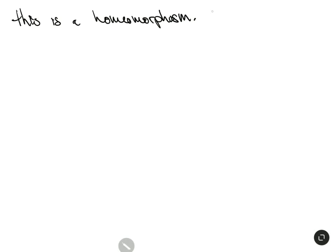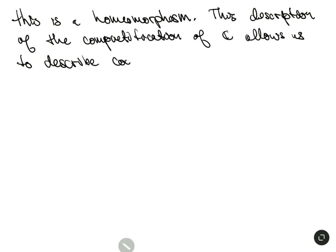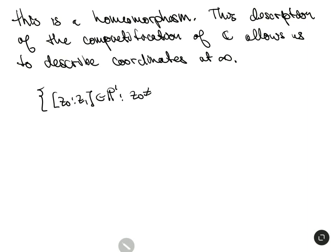This description of the compactification of ℂ allows us to describe coordinates at infinity. In particular, if we look at the set in P¹ where z₀ ≠ 0, this gives a map to ℂ where we take [z₀ : z₁] and map it to z₁/z₀. We call this coordinate ζ.